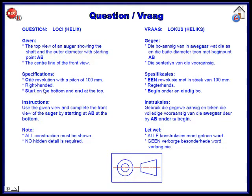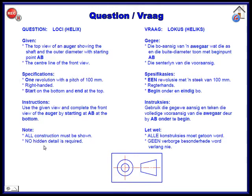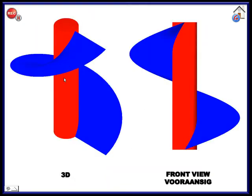So right-handed would then be anticlockwise. Right-handed, bottom up, anticlockwise. The instruction asks us to do the auger starting at AB, and you must show no hidden details and all the construction must be available to scrutinize.